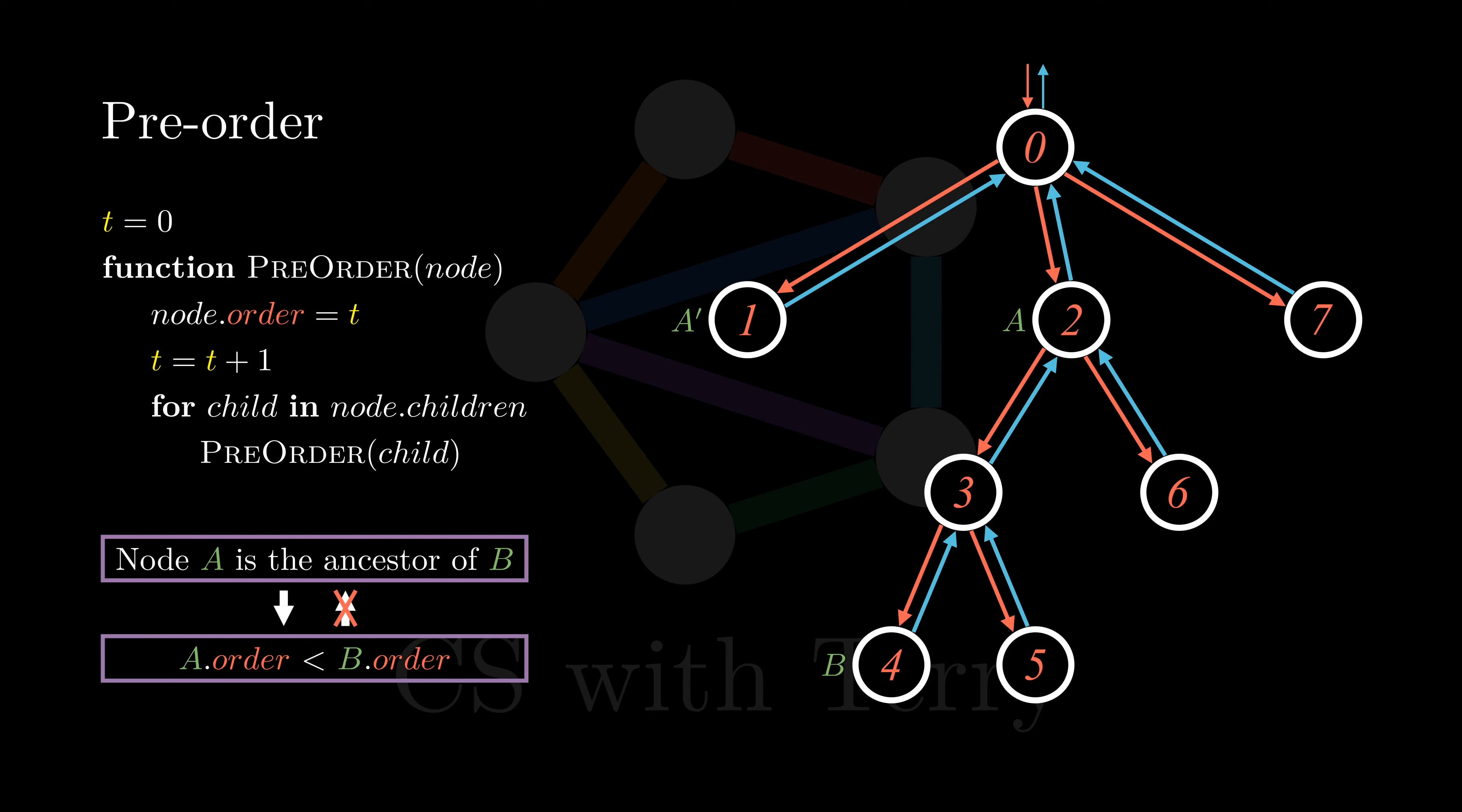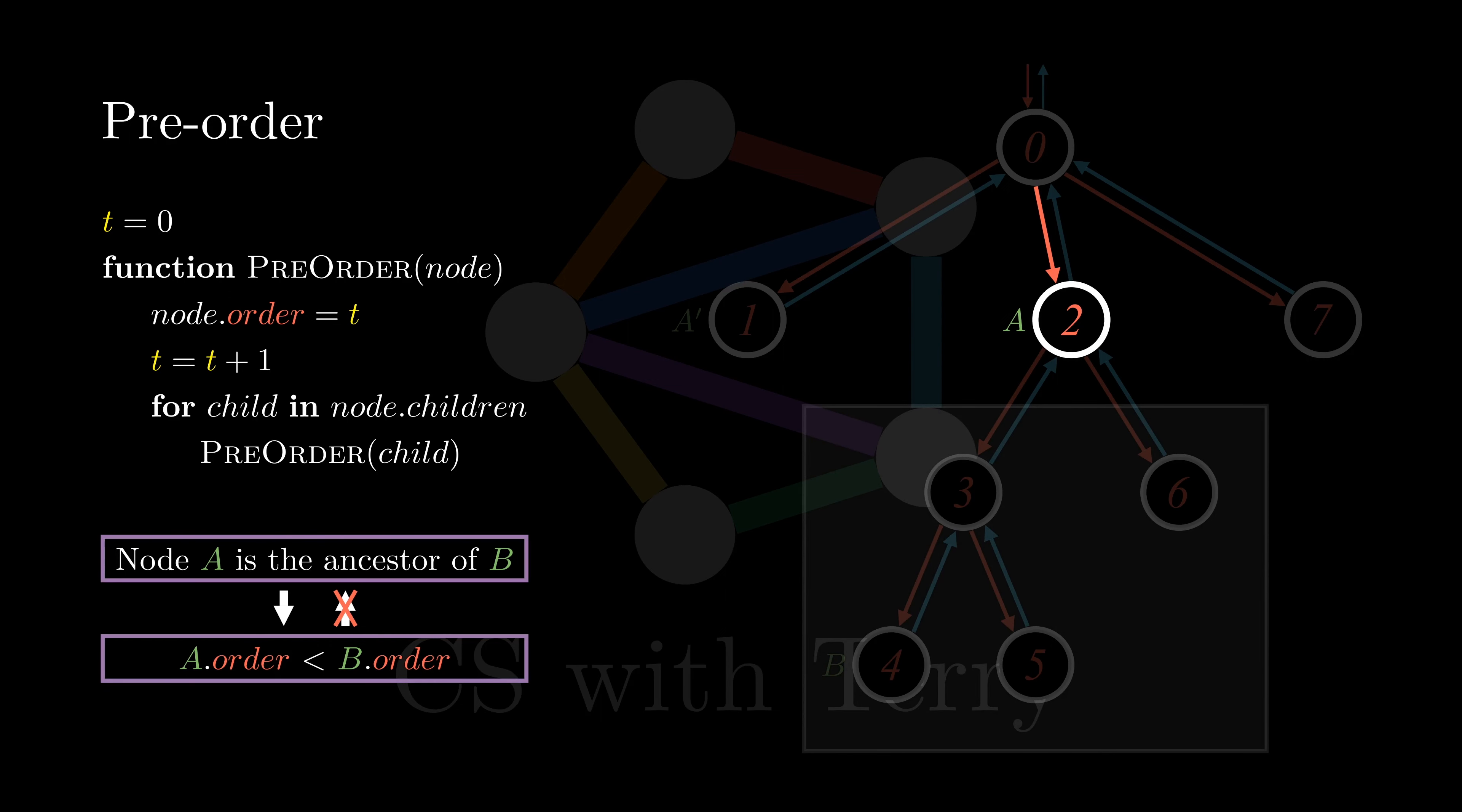Let's think about this question. Both the indexes of A and A' are smaller than that of B. But why is it that only A is the ancestor of B, not A'? To answer it, let's review the process of visiting A and A'. When visiting A, we first assign index to node A, and then visit all subtrees of A, which of course include node B.